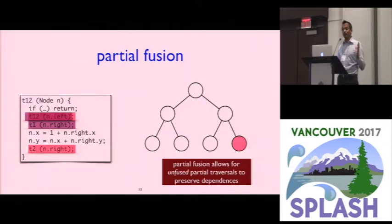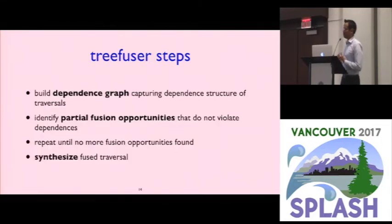So this is all well and good, but figuring this out in the presence of very complicated things is obviously a challenging task. So to address this problem, we came up with an approach we call tree fuser, which does a couple of things. First, it builds a dependence graph that captures the dependent structures of the traversals. Then it identifies fusion opportunities, in particular partial fusion opportunities, and continues identifying more and more fusion opportunities until eventually there's nothing left to be done. You've fused as much as you can, and then we synthesize code. So let me quickly walk you through these steps.